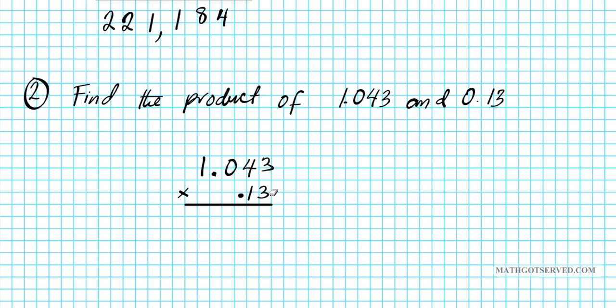Now when we're multiplying, ignore the decimal points. We are going to look at that at the end. So we're going to act as though the decimal point is invisible and we'll just multiply. Starting from the right-most digit of your multiplier, just multiply 3 times 3, 9. 3 times 4 is 12, 2, carry 1. 3 times 0 is 0, plus 1. 0 plus 1 is 1. Ignore the decimal. 3 times 1 is 3.